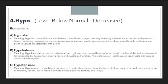The next prefix is 'hypo,' which is used for indicating something lower than normal or a decreased value. The first example is hypoxia — a condition in which there is insufficient oxygen reaching the body tissues. Insufficient means lesser, below normal, decreased, and that is indicated by the prefix hypo. The second example is hypokalemia, a condition characterized by lower than normal levels of potassium in the blood. Potassium is essential for various bodily functions including nerve and muscle cell function.